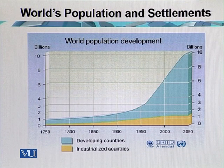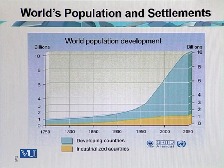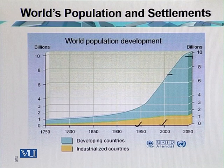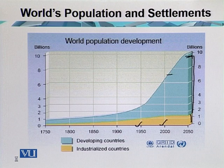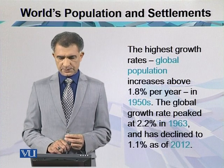World population development over the past 200 years shows that it was a slow growth rate during the industrial revolution, but today the rise in population is due to the rise in living standards. By 2000, there was a rapid increase, and today we are touching 7 billion. But in 2050, it may reach 10 billion. The developing regions account for most of this growth, while industrialized developed countries have smaller population sizes. The highest growth rates — global population increase above 1.8 percent per year — were recorded in the 1950s.